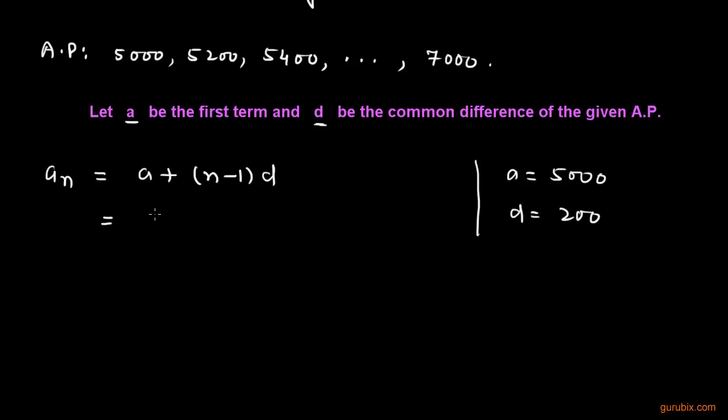So now we can put the value of a and d in this general term of arithmetic progression. We can write 7000 equals 5000 plus (n minus 1) times 200.